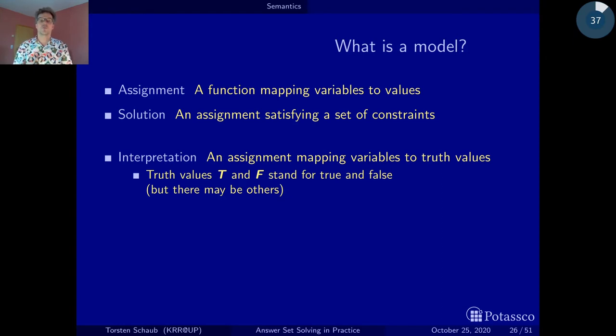Instead of having an arbitrary range, we consider only truth values. In most cases, we consider a boolean setting. Boolean means we have two truth values, which we denote by uppercase T and uppercase F, which stand for true and false, respectively. To have a sneak preview, we'll also be using three-valued interpretations sometimes with an additional third truth value that stands for undefined, to capture situations where we have not yet calculated the truth value of a variable.